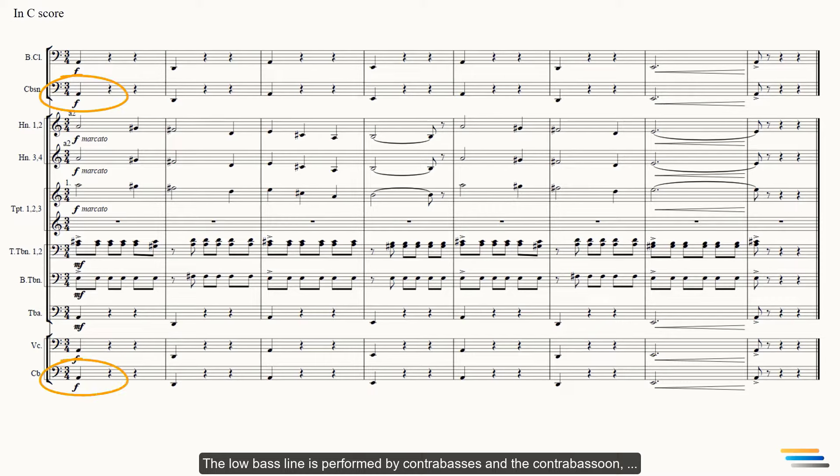The low bass line is performed by contrabasses and the contrabassoon, while the cellos, bass clarinet and tuba double them an octave higher.